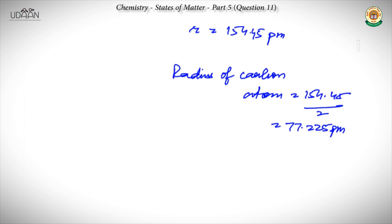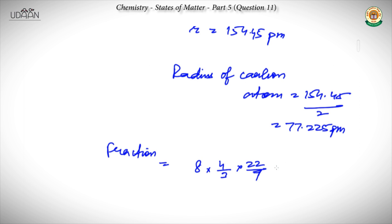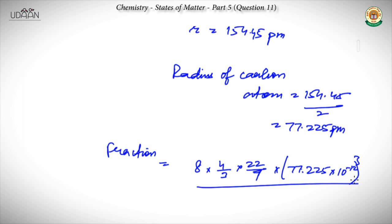The fraction of total volume occupied by the carbon atoms equals 8 times (4/3 × π × r³) divided by a³. Using r = 77.225 into 10 to the power minus 12 meter and a = 356.7 into 10 to the power minus 12 meter, with 8 being the effective number of atoms.